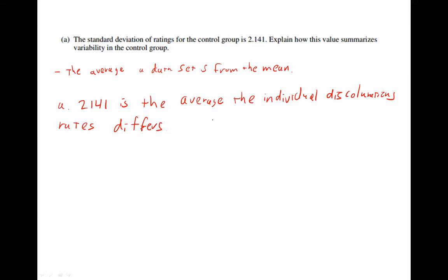Did I spell differs correctly? Differs from the mean discoloration. And that right there is enough of an answer to earn you full credit. Because again, what they're looking for is two things. Can you correctly interpret what standard deviation is and make sure you write it in context. So 2.141 is the average distance the individual discoloration rates differs from the mean discoloration. I added the context. I correctly stated what standard deviation is. Therefore, this would be an answer that earns full credit.